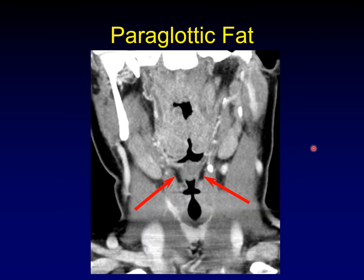Here is the paraglottic fat as seen in the coronal plane. You can almost think of the paraglottic fat as an extension up of the fat that fills the false vocal cords, extending further superiorly into the supraglottis. And you can imagine how a tumor that arises within the false vocal cords is prone to secondarily invade the paraglottic fat.